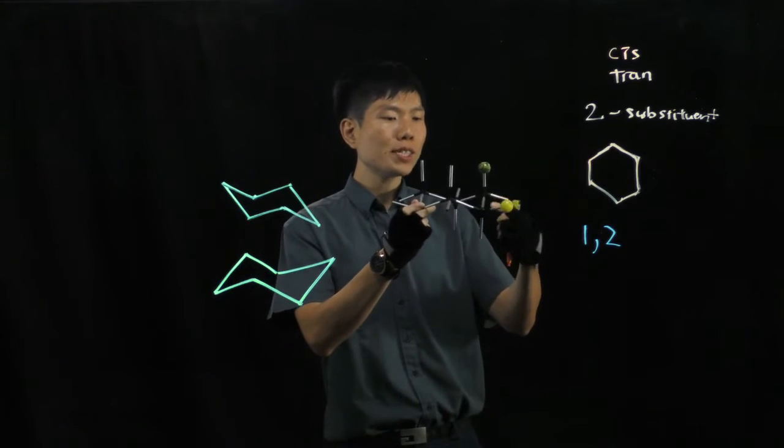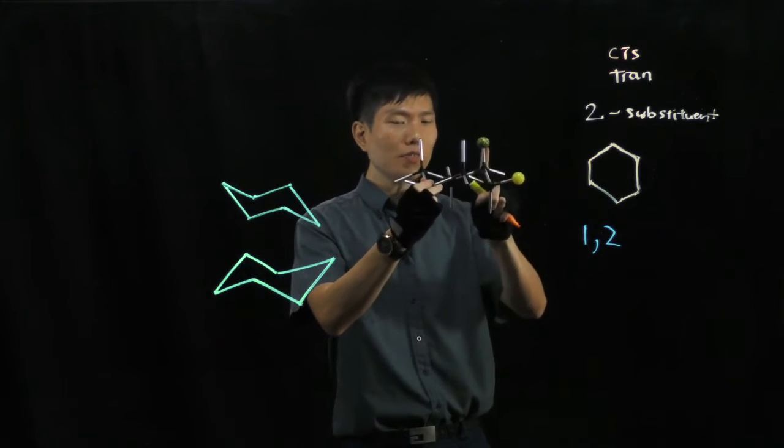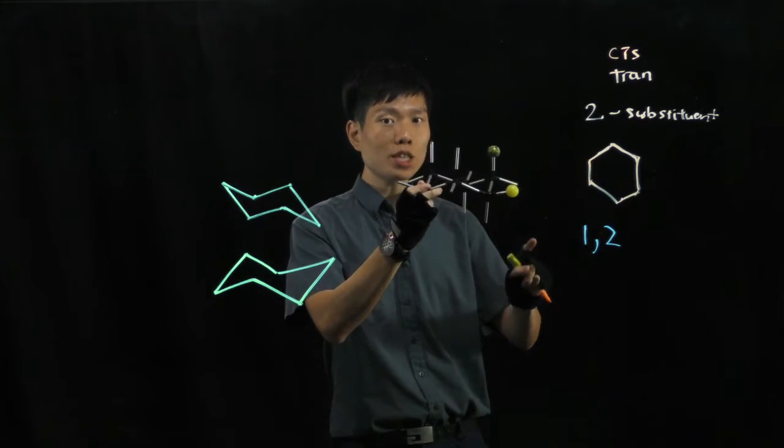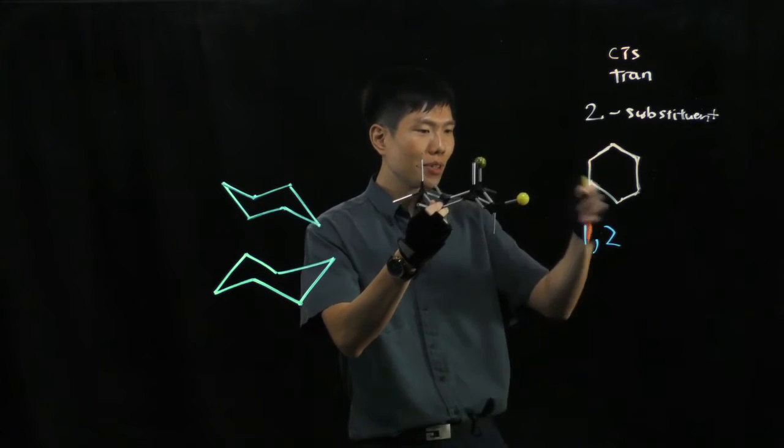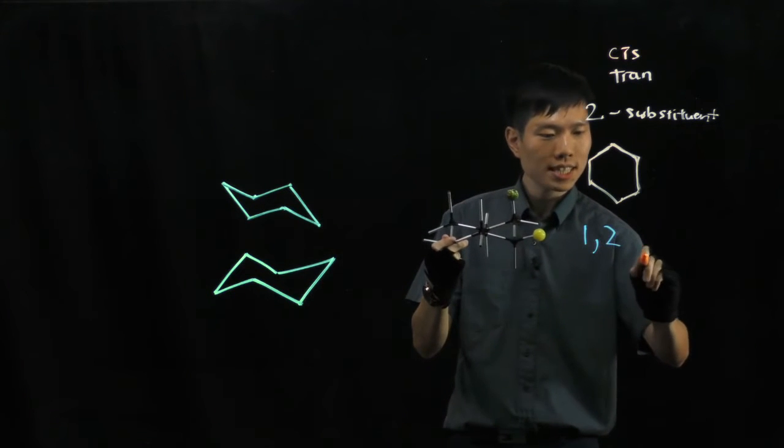Over here you see a 1,2-disubstitution, but one of this group is pointing up, the other one is pointing to the side, but it's up, up, so we have 1,2-cis.